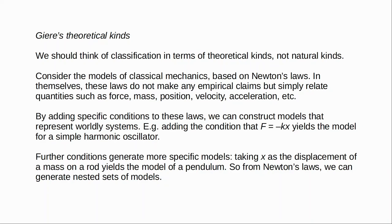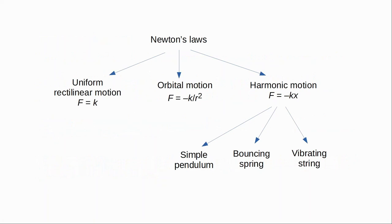Using Newton's laws we can generate these nested sets of models. This diagram shows the overall situation: we have Newton's laws, and then we use these laws to derive fairly abstract general models for uniform motion, orbital motion, and harmonic motion. From the model of harmonic motion we get more specific models by adding further conditions — the simple pendulum, the bouncing spring, the vibrating string. And from these we can construct further models, for instance a variety of pendulum models which are more or less idealised.